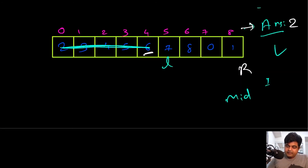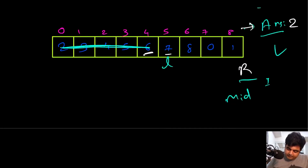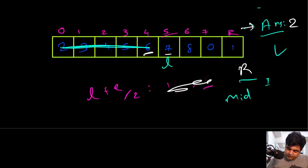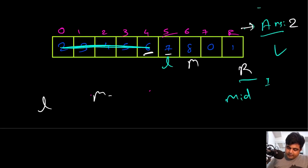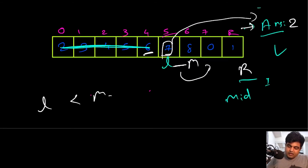Now we have a new left pointer and the same right pointer. Left is still greater than right, so we find a new mid. Left is five, right is eight, so (5+8)/2 floored is six — position six is the new mid. We compare left with mid: left is actually less than mid, so the answer cannot lie between left and mid. We check whether to update the answer — current answer is two, this value is seven, so no update needed. We move left to the right of mid.